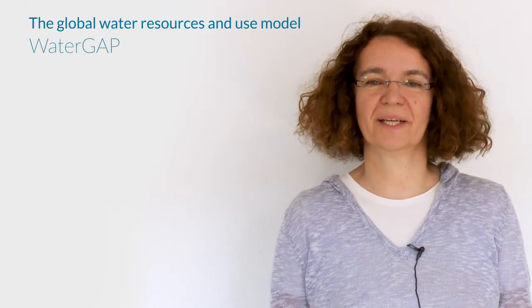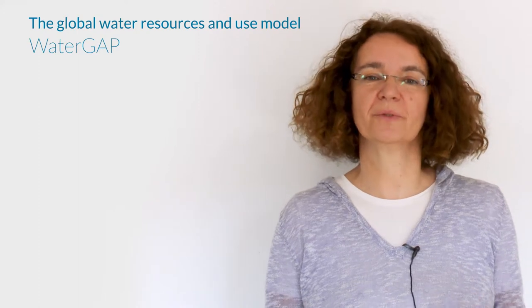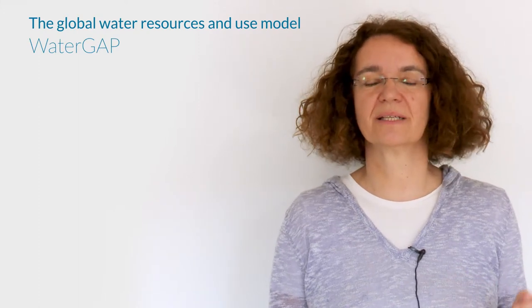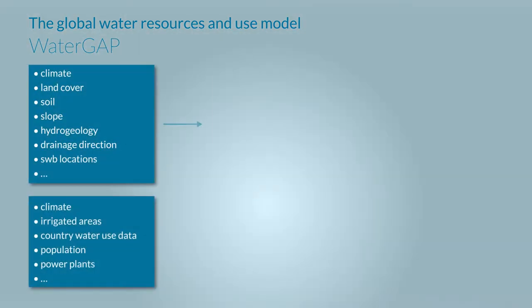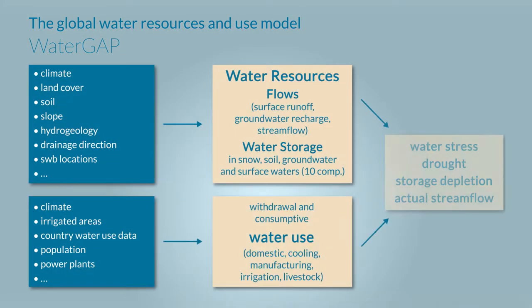Now I would like to present to you the global hydrological model WaterGAP as WaterGAP can be used to quantify hydrological drought hazard on all continents of the earth. WaterGAP has been developed for a long time and now is able to produce really reliable results even though like all hydrological models it has its uncertainties.